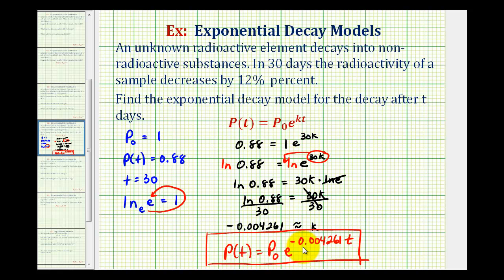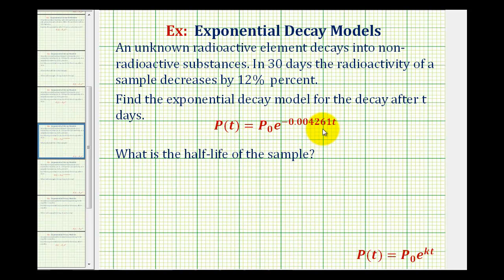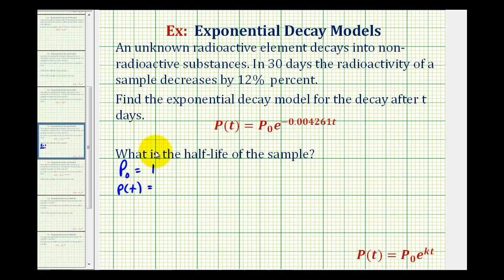Now we want to find the half-life of the radioactive element. Half-life is the amount of time it takes for half of the radioactive material to decay to non-radioactive material. Again, we aren't told a starting amount, so we can start with any amount. Letting p₀ = 1, the amount still radioactive after t days will be 0.5. Our goal is to solve for t, and we do now have the value of k, so there's only one unknown.